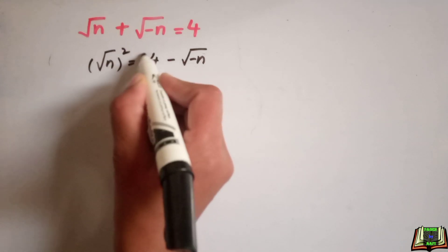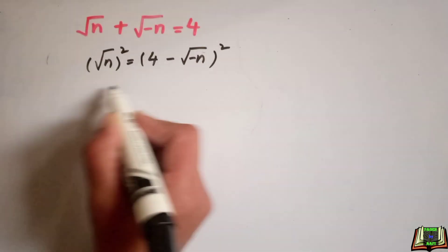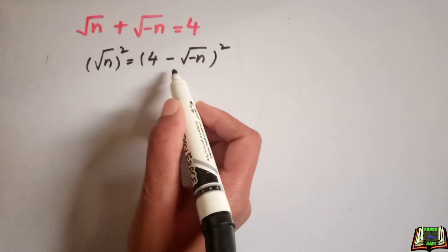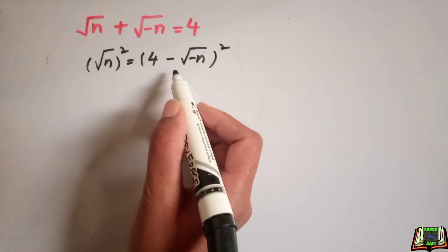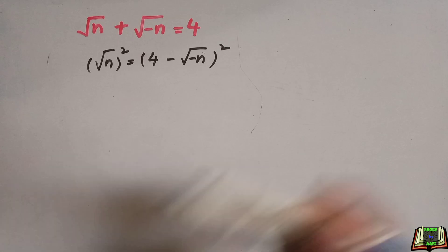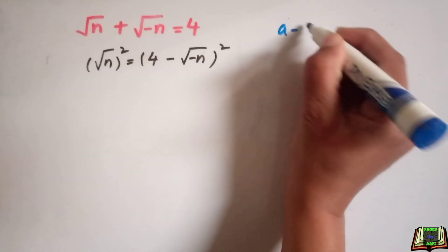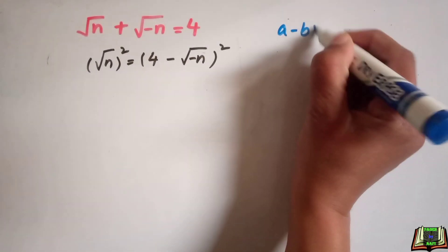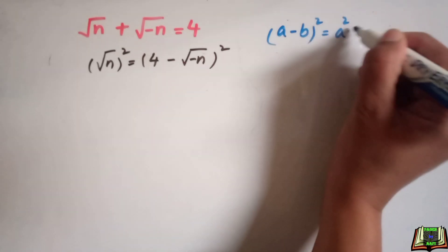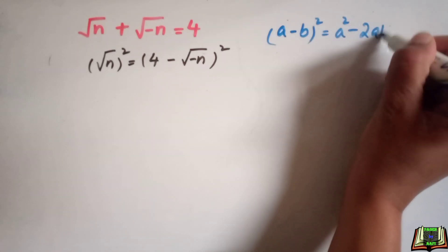At this step, we are going to take the square of this equation on both sides. Look at the right hand side — this is in the form of a minus b whole square, and the identity a minus b whole square is equal to a squared minus 2ab plus b squared.